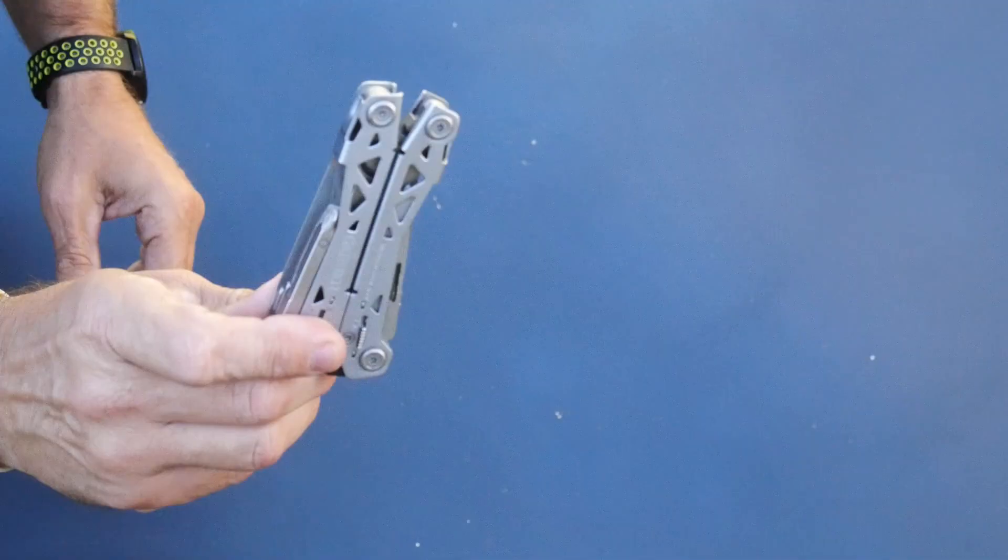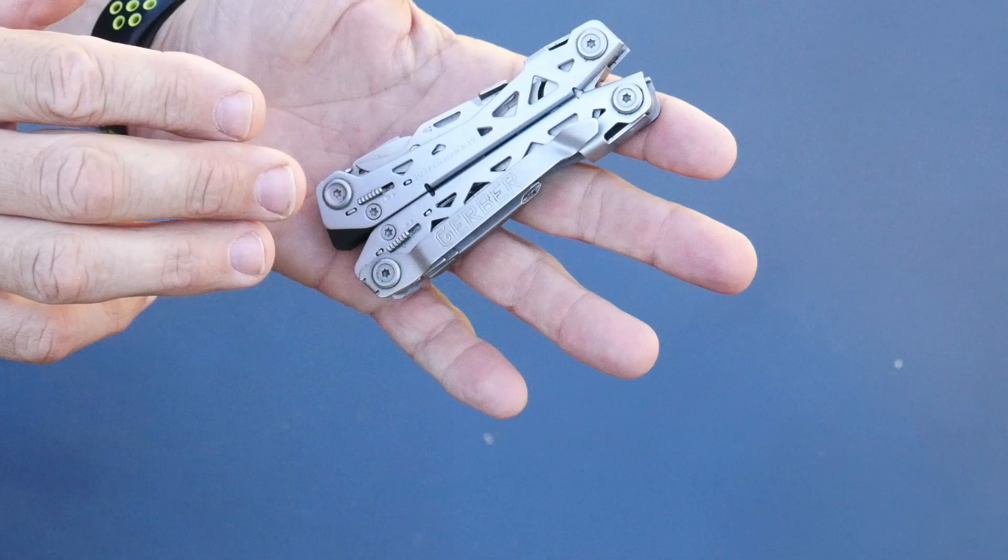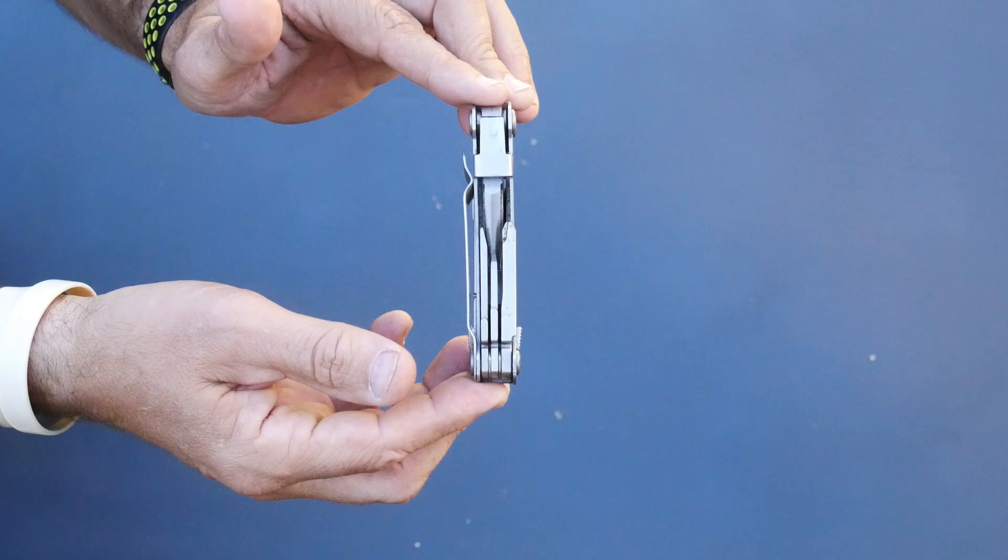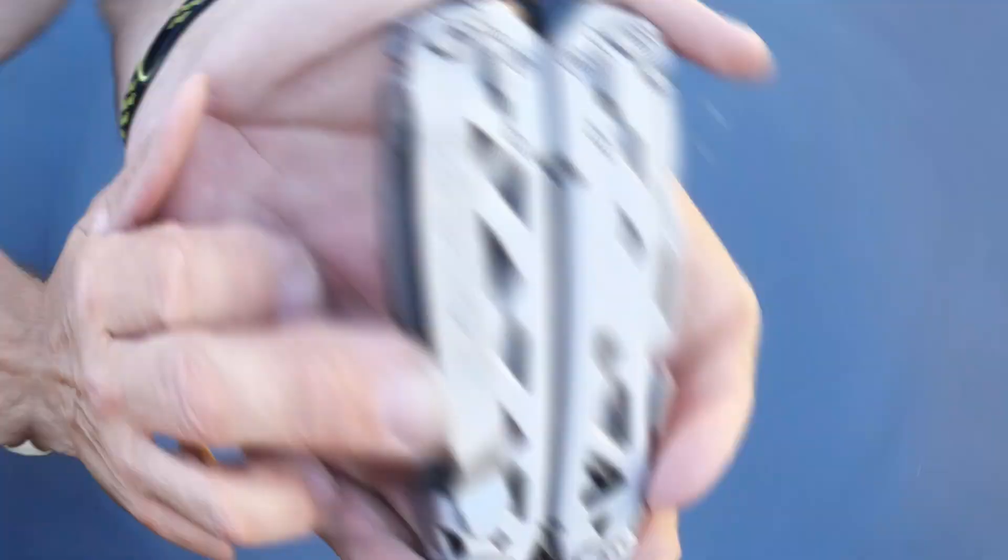This is the Gerber Suspension NXT 15-in-1 multi-tool, which is absolutely amazing in such an affordable package. When you look at this belt clip built in, which I really like that belt clip.